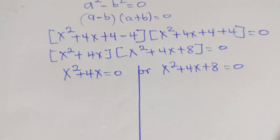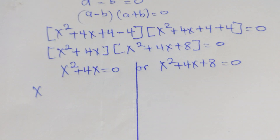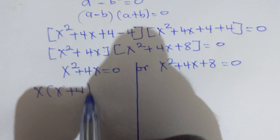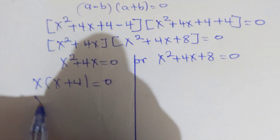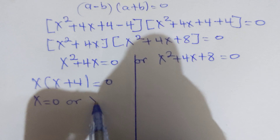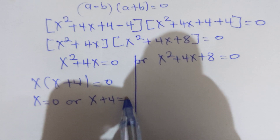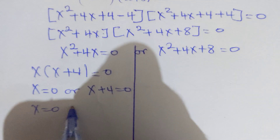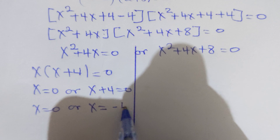For equation 1, we factorize x to get x(x + 4) = 0. This gives us x = 0 or x + 4 = 0, so x = 0 or x = negative 4.